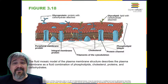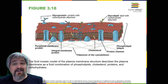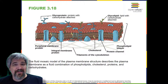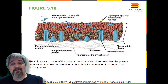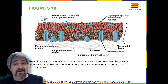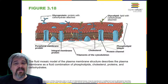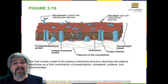Plasma membranes range from 5 to 10 nanometers thick. As a comparison, human red blood cells, visible by light microscopy, are approximately 8 micrometers thick, or approximately 1,000 times thicker than a plasma membrane. The plasma membrane is made up primarily of a bilayer of phospholipids with embedded proteins, carbohydrates, glycolipids, and glycoproteins, and in animal cells, cholesterol. The amount of cholesterol in animal plasma membranes regulates the fluidity of the membrane and changes based on the temperature of the cell's environment.